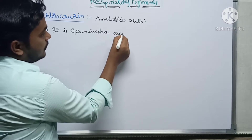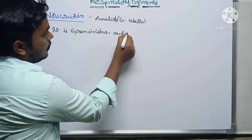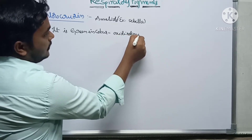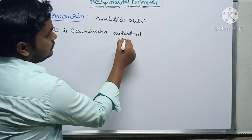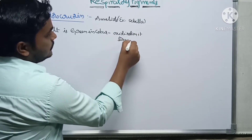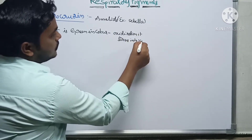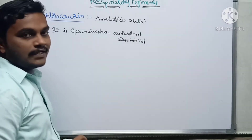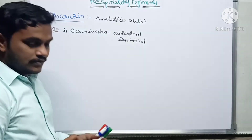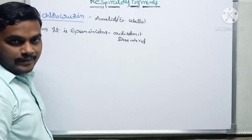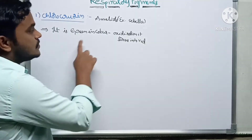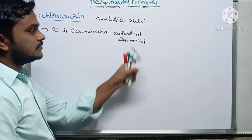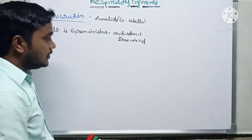But after oxidization, it turns into red. So normally the color is green, but when oxygen is added, it turns into red color.